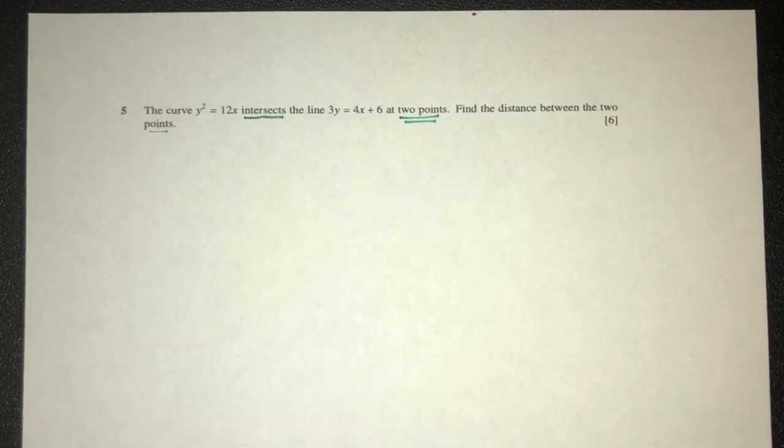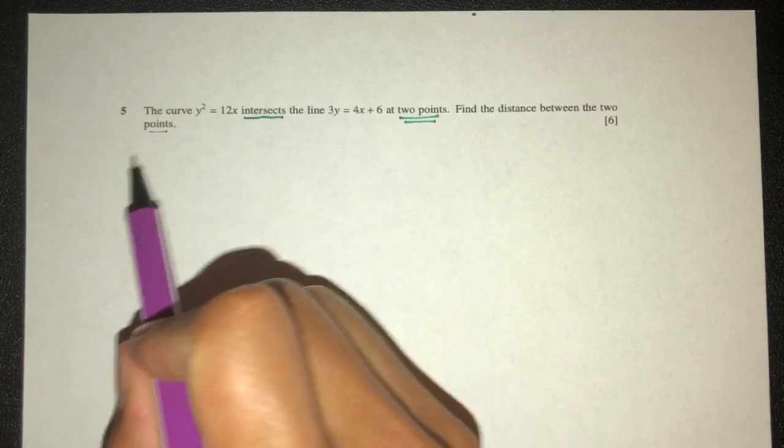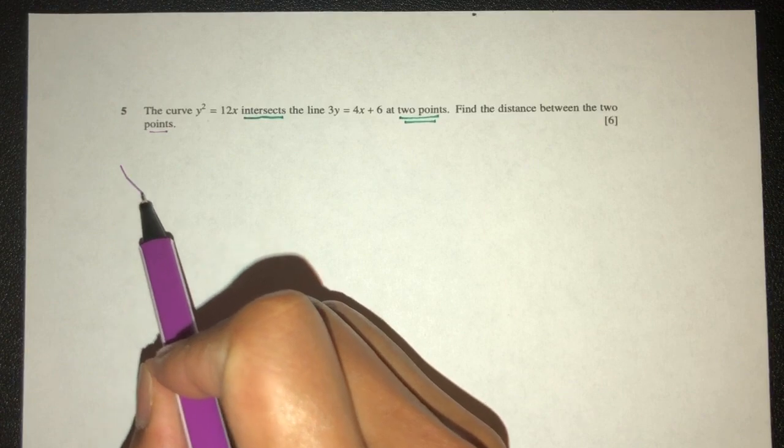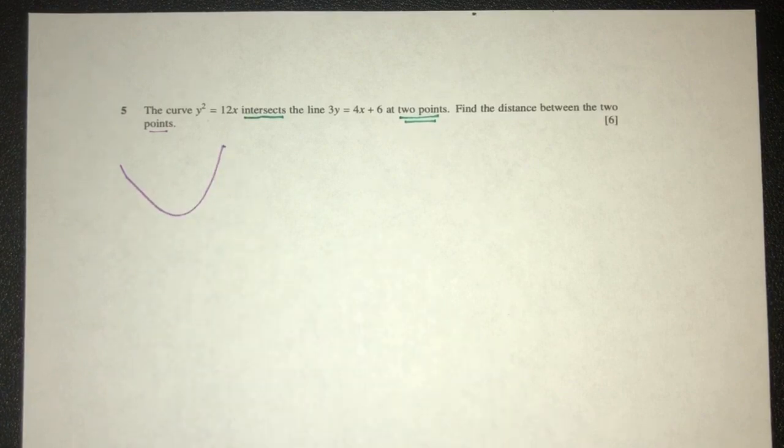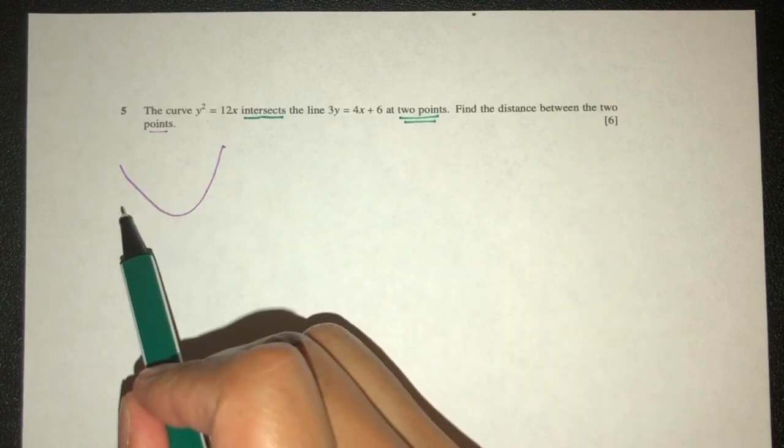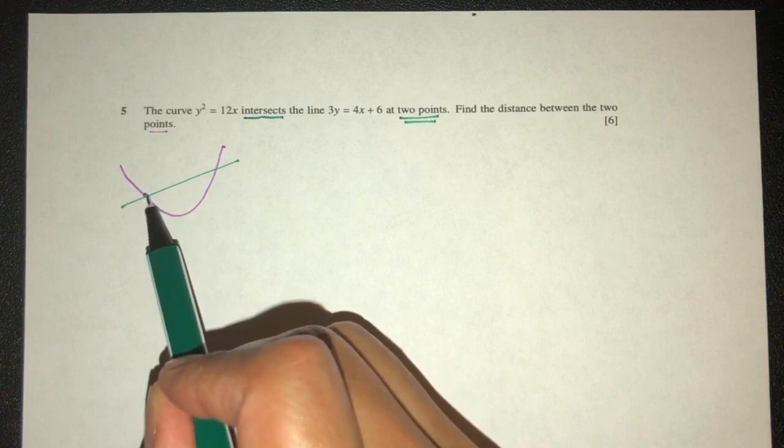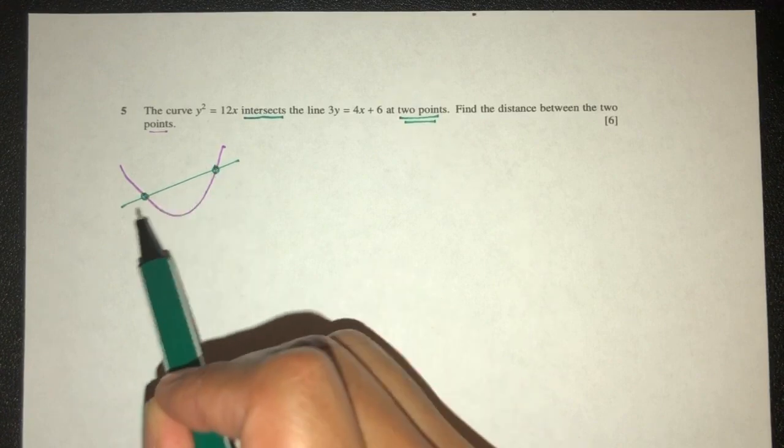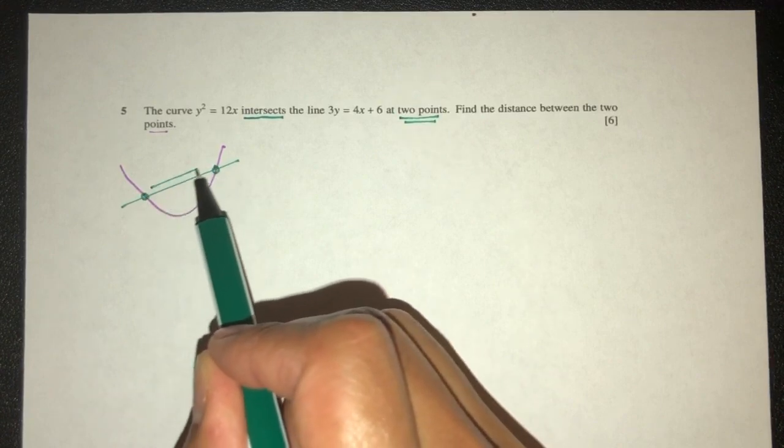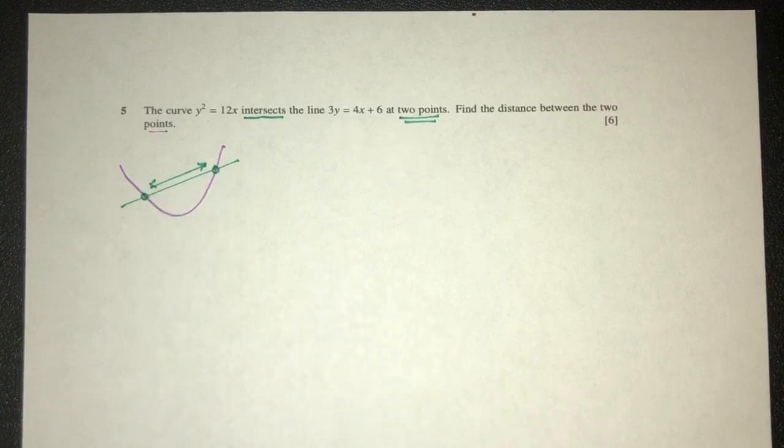So first to find the distance we understand we have to find the points. For example here the main idea is that we have a curve. Let's say the curve is this shape. Then we have a straight line which meets the curve at two place. We want to find those two points and then find the distance between them.